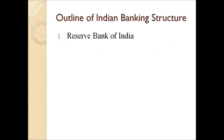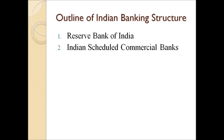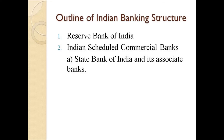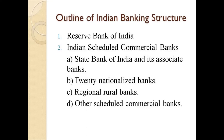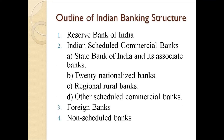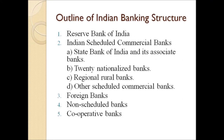The Indian Banking Structure has been classified into five categories: 1. Reserve Bank of India (RBI), 2. Indian Scheduled Commercial Banks — subclassified into State Bank of India and its Associate Banks, 20 Nationalized Banks, Regional Rural Banks, and Other Scheduled Commercial Banks, 3. Foreign Banks, 4. Non-Scheduled Banks, and 5. Cooperative Banks.